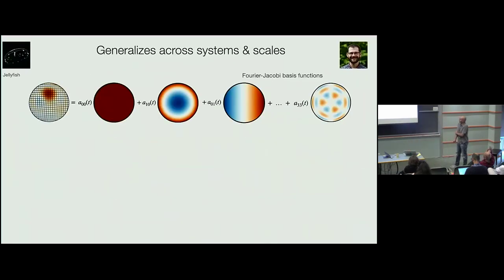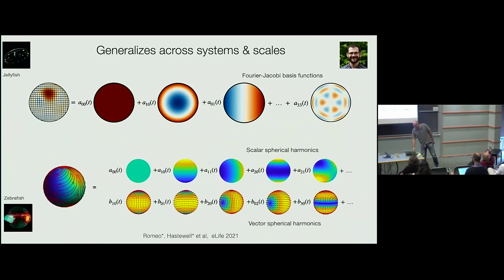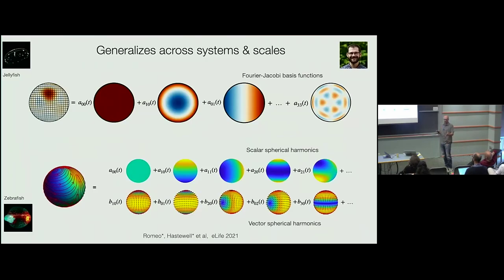This approach generalizes across systems. For jellyfish, you take Fourier-Jacobi basis functions and decompose your shape deformation and neural activity. For tissue dynamics on a spherical surface or egg yolk, you use spherical harmonics and vector spherical harmonics, then do everything in mode space. We try to build these pipelines so that we choose the right basis for each system while the back end remains similar across all of them.